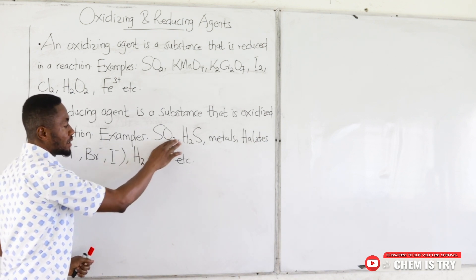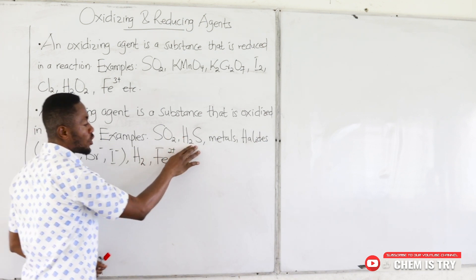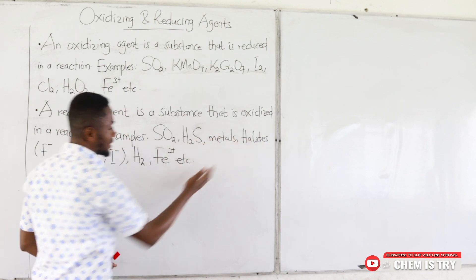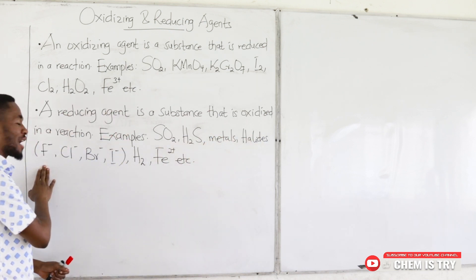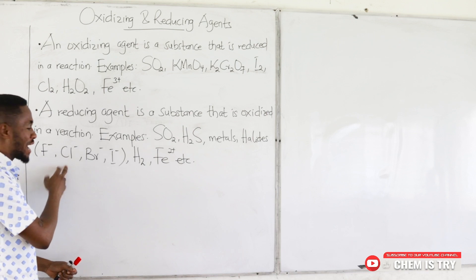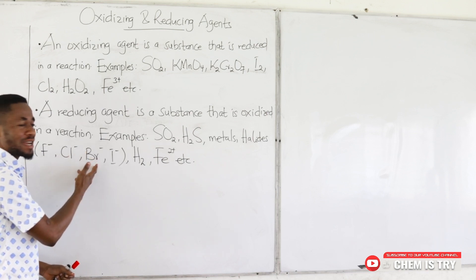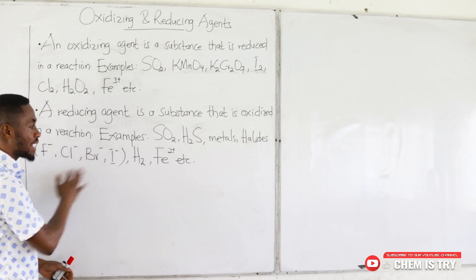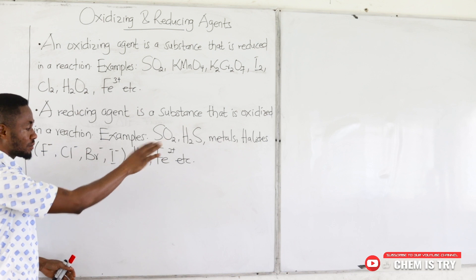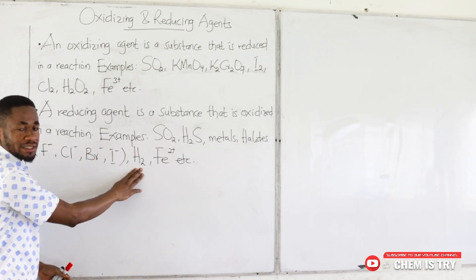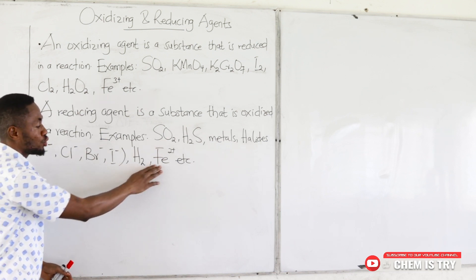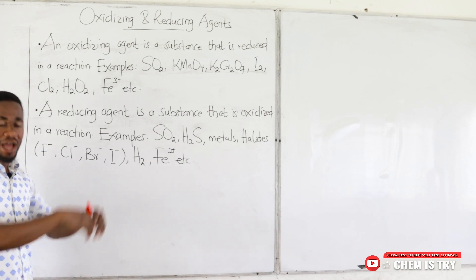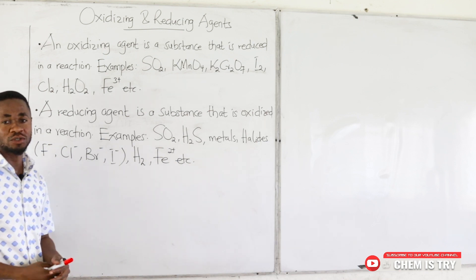Examples of reducing agents include sulfur dioxide, hydrogen sulfide, metals, halides — the fluoride ion, chloride ion, bromide ion, and iodide ion — hydrogen gas, and Fe²⁺ ions, among others.